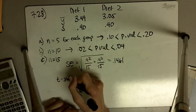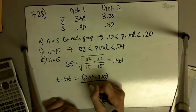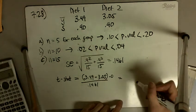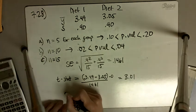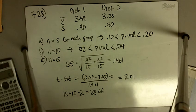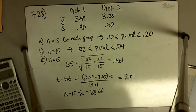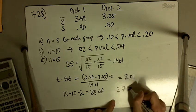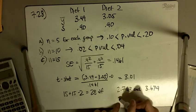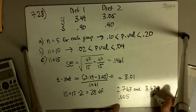The t-statistic, the same as it's always been, 3.49 minus 3.05 divided by 0.1461. I guess we can put minus 0 up there, and that gives us a t-statistic of 3.01, and we have 15 plus 15 minus 2, or 28 degrees of freedom. If we look up 28 degrees of freedom in the table, we see that 3.01 lies in between 2.763 and 3.674. And this corresponds to 0.005, and this is 0.0005.